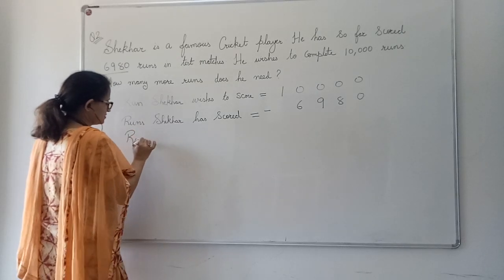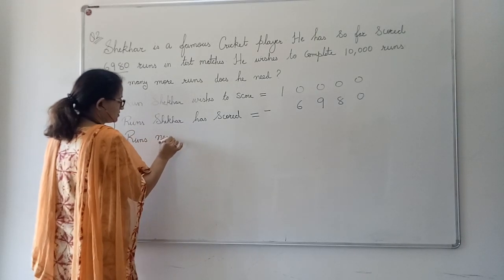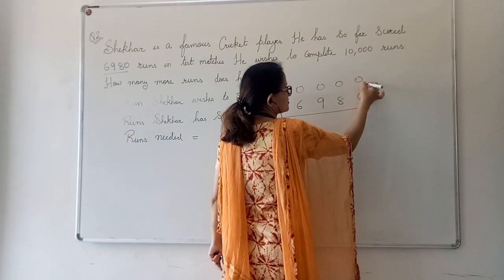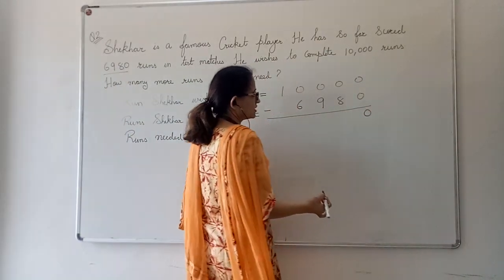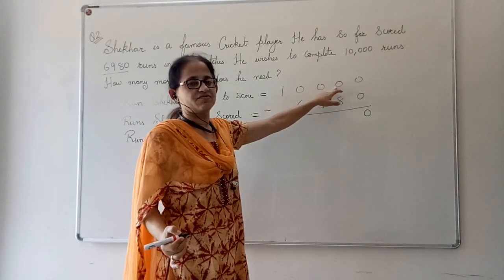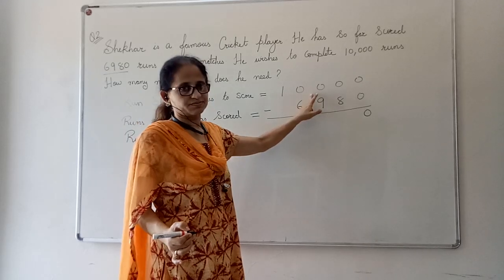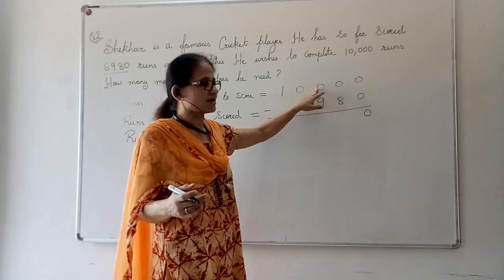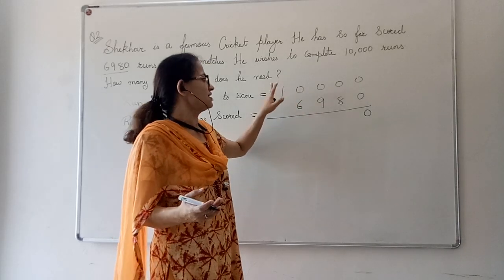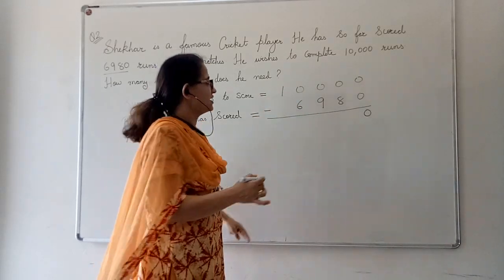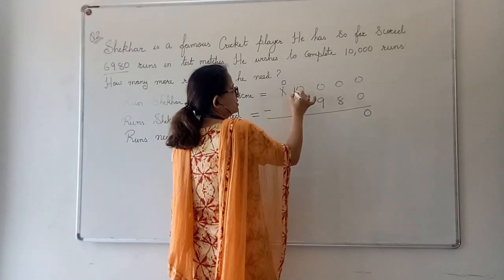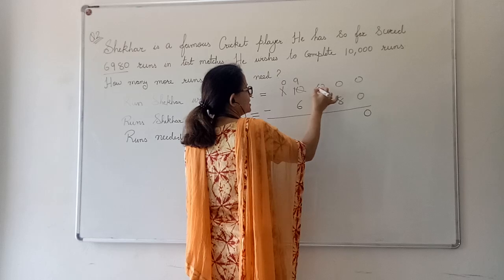Now, 0 minus 0 will be 0. I cannot subtract 8 from 0, so I need to borrow from the neighbor. But the neighbor is 0, so again I will go to another neighbor, which is also 0. Then I will ask 1 for help. So I will borrow 1 from the 1. Then it becomes 10, 9.